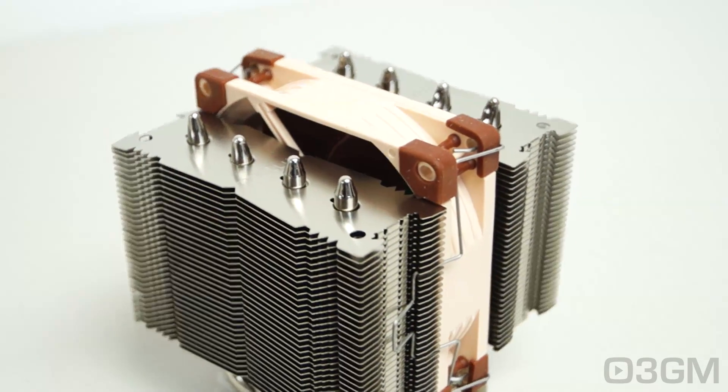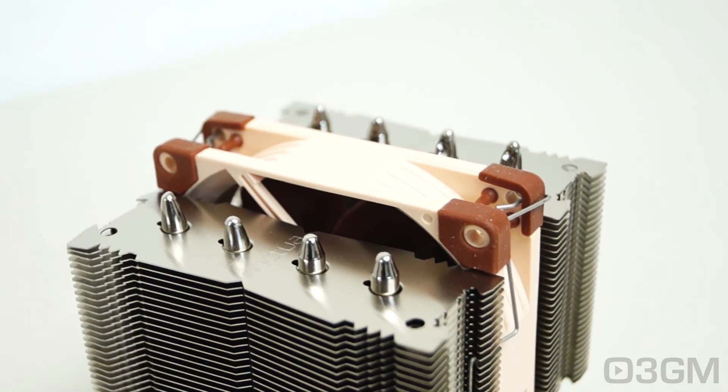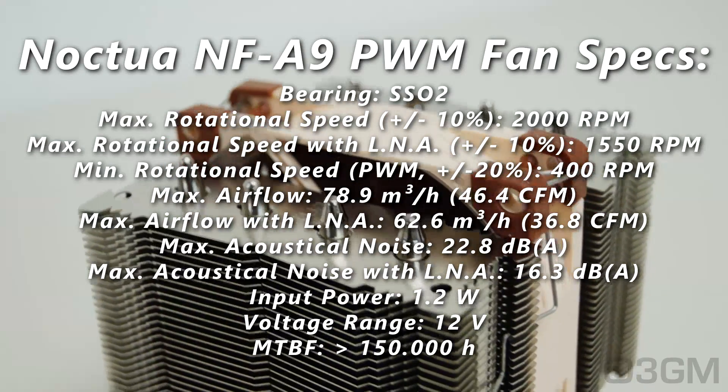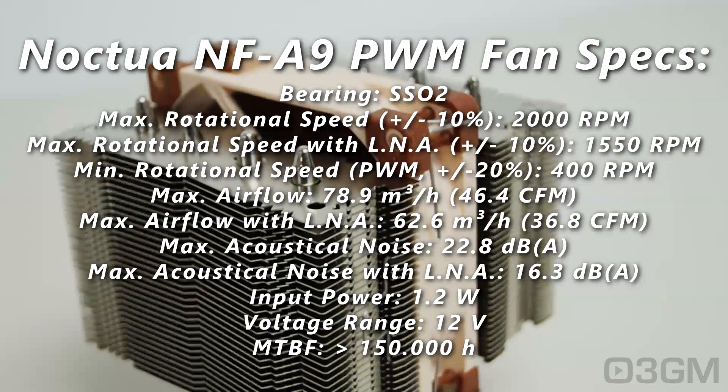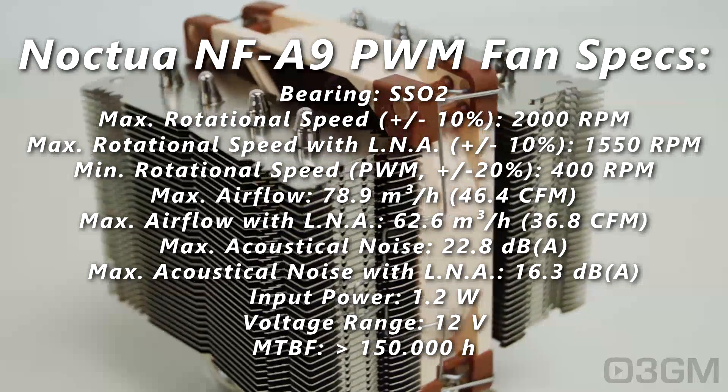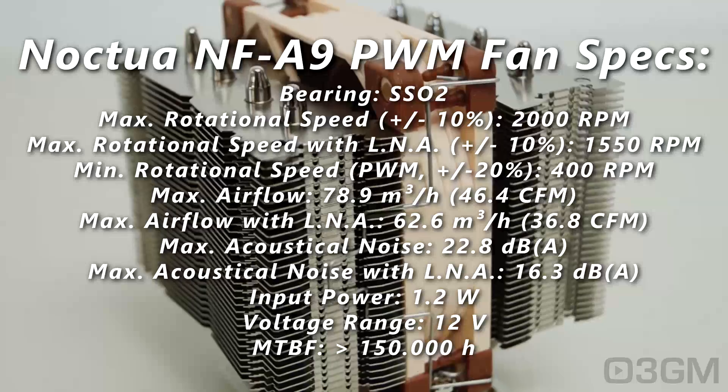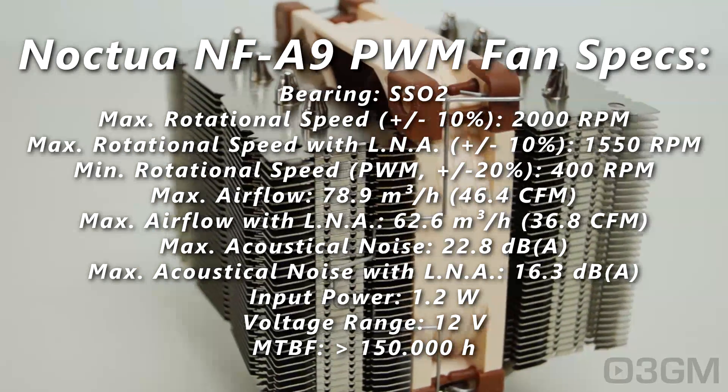You've got two towers here with a fan sandwiched in the middle. Now this is Noctua's NF-A9 fan, an incredible fan that comes with an SS02 bearing. The maximum rotation speed is 2,000 RPMs. The maximum rotation speed with the low noise adapter attached is 1,550 RPMs. The minimum rotation speed is 400 RPMs.